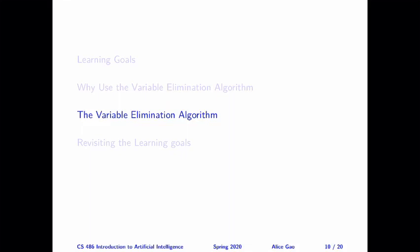Hello everyone, this is Alice Gal. In the previous video, I gave you some high-level ideas about why we want to use the variable elimination algorithm. If we use this algorithm, we can compute a probability based on a Bayesian network more efficiently than if we were to use the joint distribution directly. In this video, let's talk about the details of the variable elimination algorithm.